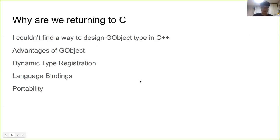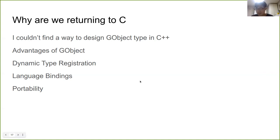Then, I found out the advantages of working with GObject. First, it supports dynamic type registration. As I said previously, we need custom Automata registration and GObject seems fit for that requirement better than other techniques such as newer languages. Second, we can support other language bindings effortlessly with GObject. GObject can automatically generate glue code for other programming languages.